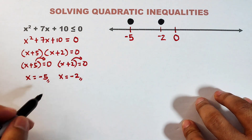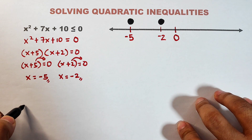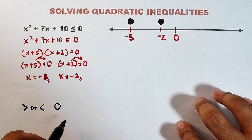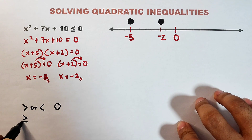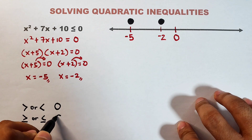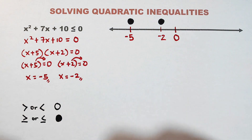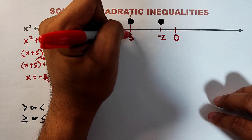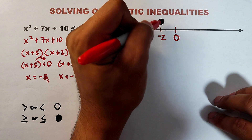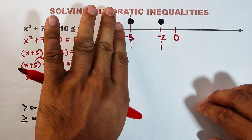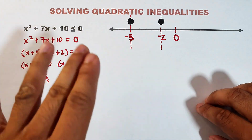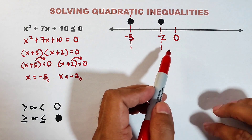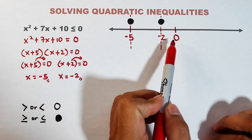As a review: if the symbols are strictly greater than or less than, we use an open circle. If the symbols are greater than or equal to, or less than or equal to, we use a solid circle. As you can see, this number line is divided into three regions. The first region is the part on the left side of -5, the second region is between -5 and -2, and the third region is on the right side of -2.